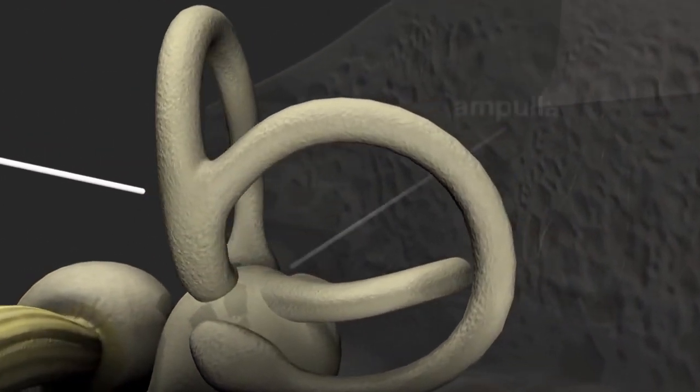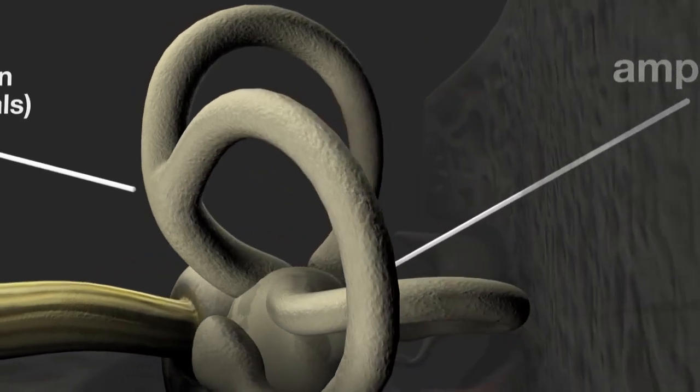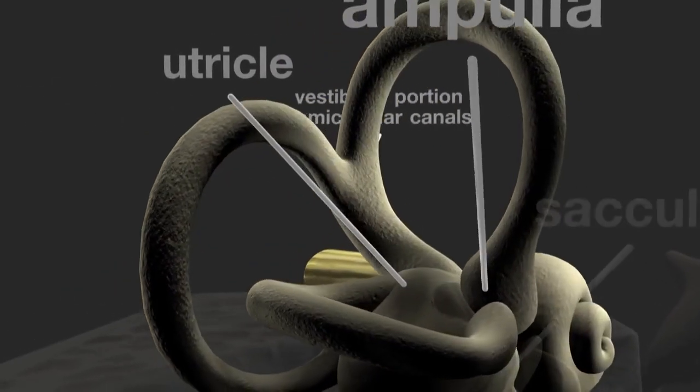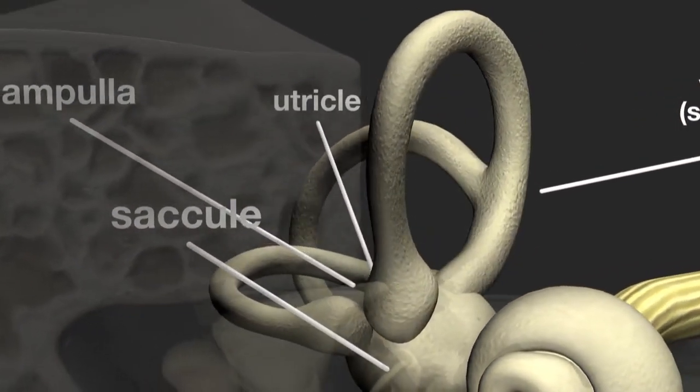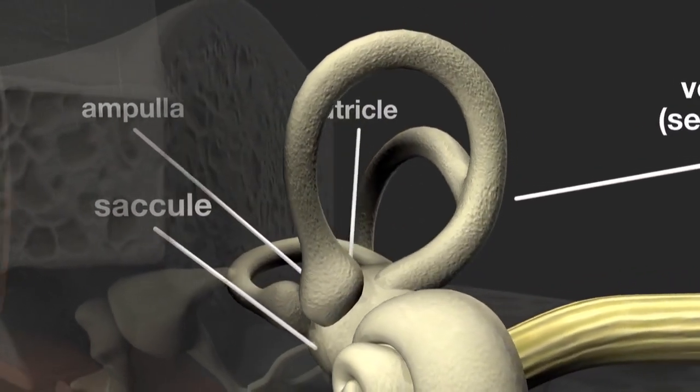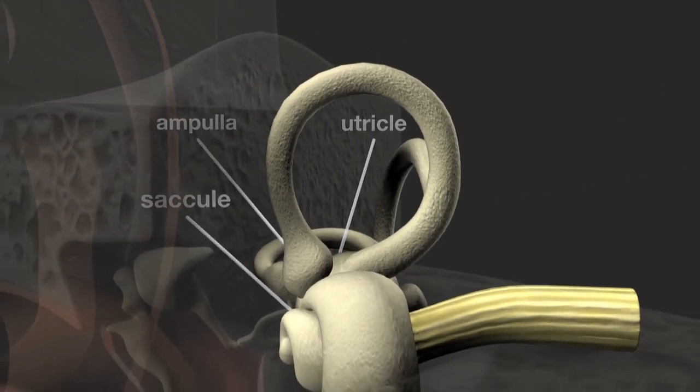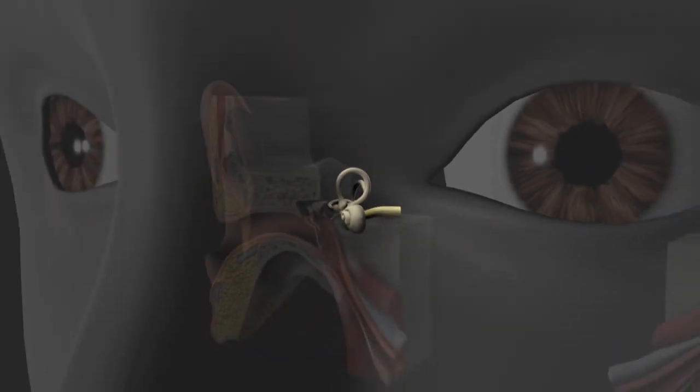And two membranous sacs, the utricle and the saccule. These contain fluid and sensory cells which move in response to head movements and travel to indicate the body status. The vestibular system works in conjunction with the eyes and the receptor cells in the joints of the body to continuously maintain our balance.